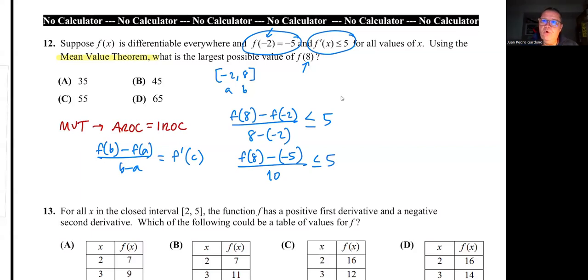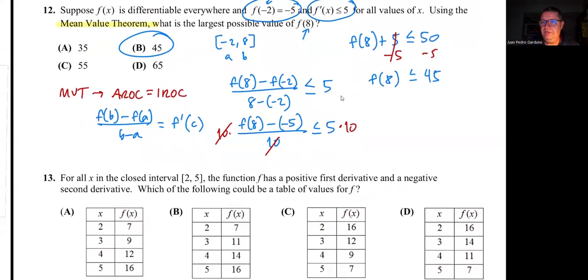I can multiply both sides by 10 to get rid of that 10 in the denominator on the left side. Then I'm going to have that f(8) + 5 because I have a minus -5 is less than or equal to 50. Then I can just subtract 5 from both sides. And I will have that f(8) must be less than or equal to 45. So that is the maximum, the largest value of f(8) in this context. This is an interesting problem.